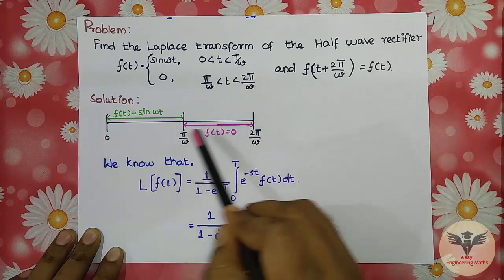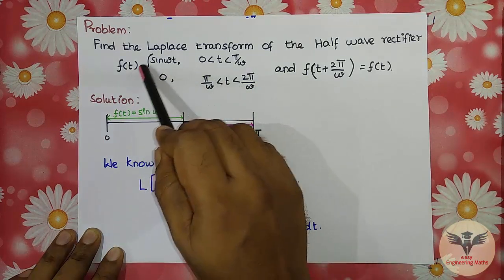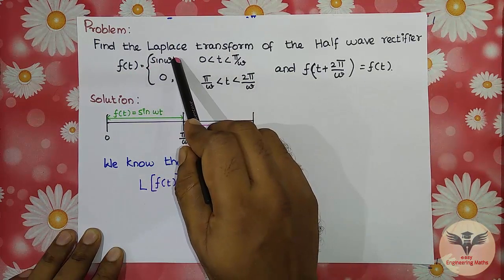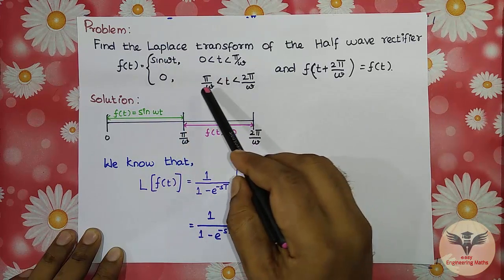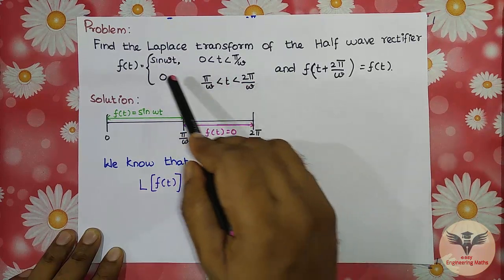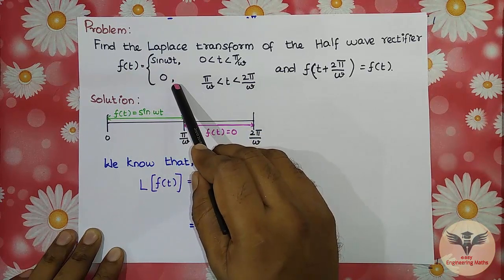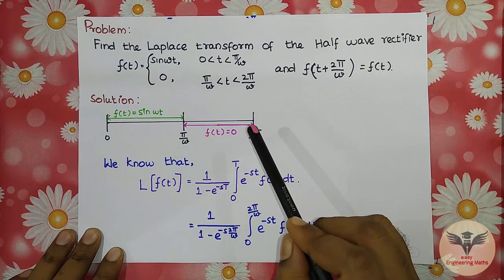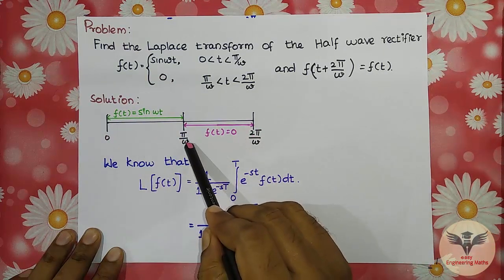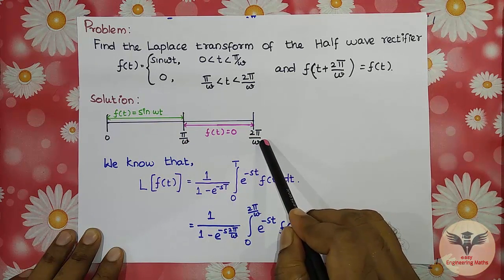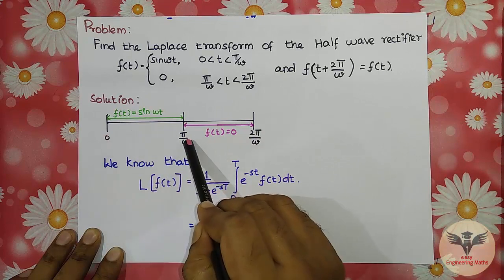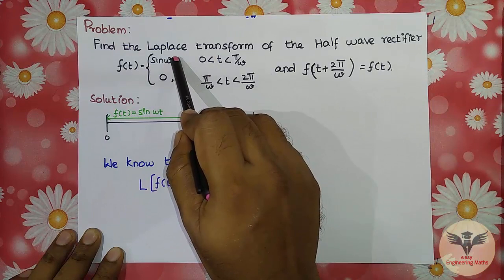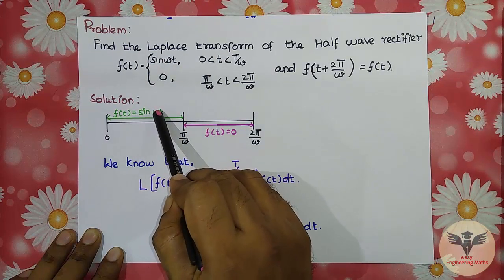The total interval is 0 to 2π/ω. Over this interval, f(t) takes different values: from 0 to π/ω, f(t) = sin(ωt); and from π/ω to 2π/ω, f(t) = 0.